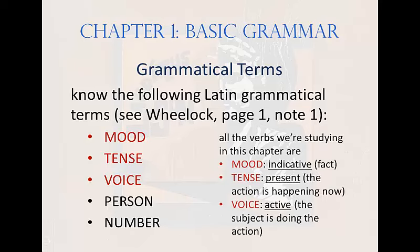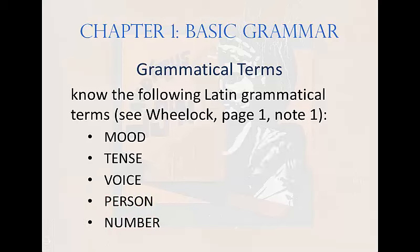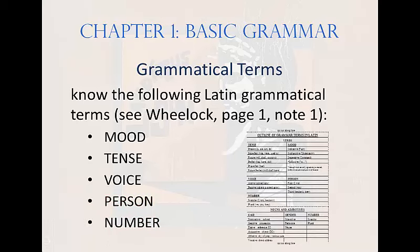For the moment, all the verbs we will deal with are indicative in mood — that is, they indicate a fact — present in tense, and active in voice, meaning the subject is the doer of the verb. In Chapter 1, we'll focus mainly on how to change person and number. To help you remember all the categories of these verbs and the terms that apply to them, there's a chart you can print out on the course website. I suggest you do that and glue it onto the front of your Latin notebook, because eventually you're going to have to glue them into your brain.